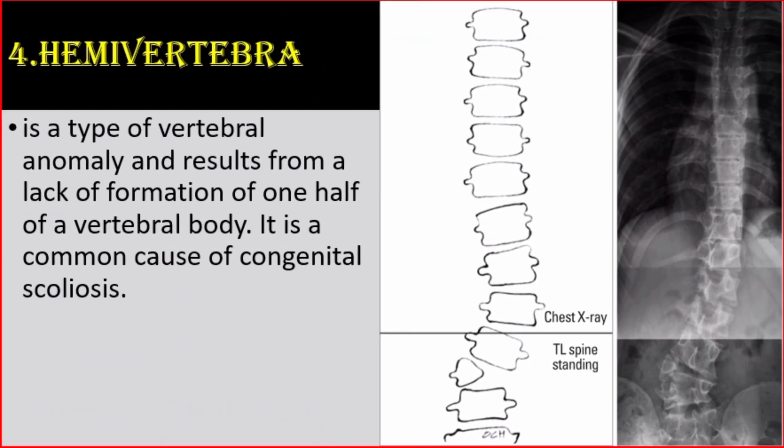Number 4: Hemivertebra. It is a type of vertebral anomaly and results from a lack of formation of one half of a vertebral body. It is a common cause of congenital scoliosis.